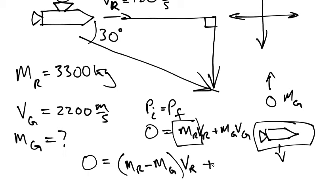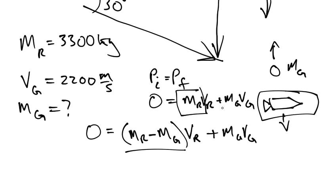We should state that as mass of the rocket minus mass of the gas, times the new downward velocity of the rocket. Then we add mass of the gas times velocity of the gas. This term is the mass of the rocket, what's left if you subtract away the gas.